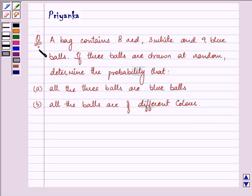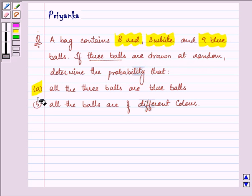Hello friends and how are you all doing today? The question says the bag contains 8 red, 3 white and 9 blue balls. If 3 balls are drawn at random, determine the probability that A. All the 3 balls are blue balls. B. All the balls are of different colour.